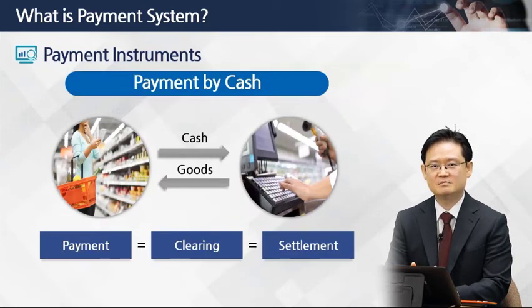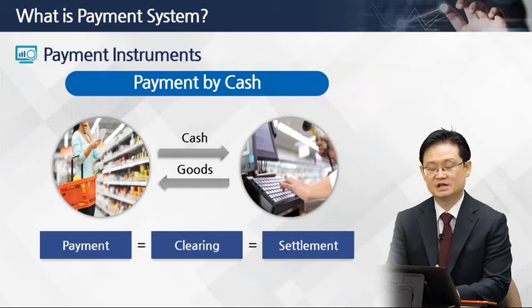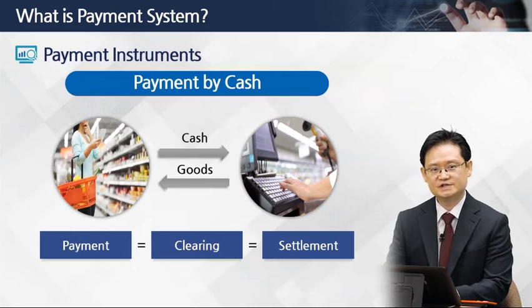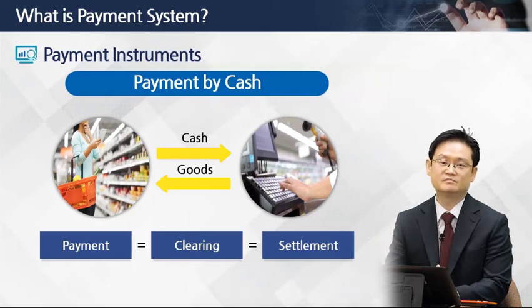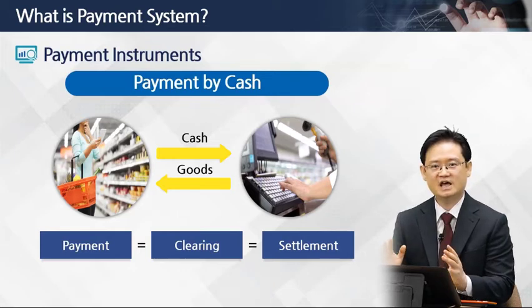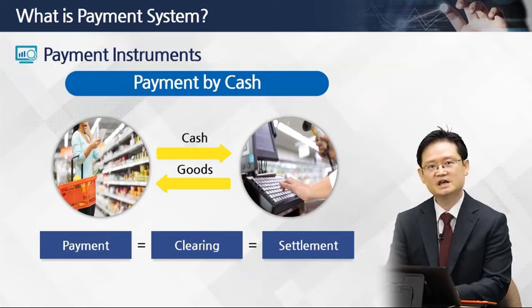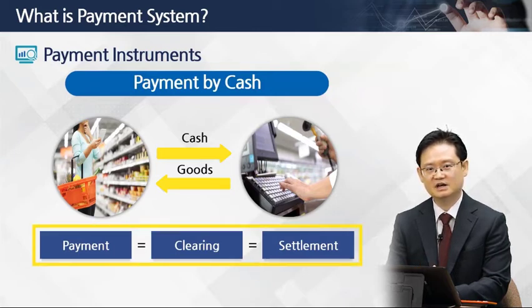Now let's think about the difference in process between cash and non-cash payment instruments. When you use cash — for example, buying something at a shopping mall — you receive the item and give the amount of cash to the merchant. That's it. We don't need any further actions to finalize the transaction. In this case, payment, clearing, and settlement happen at the same time and at the same place.